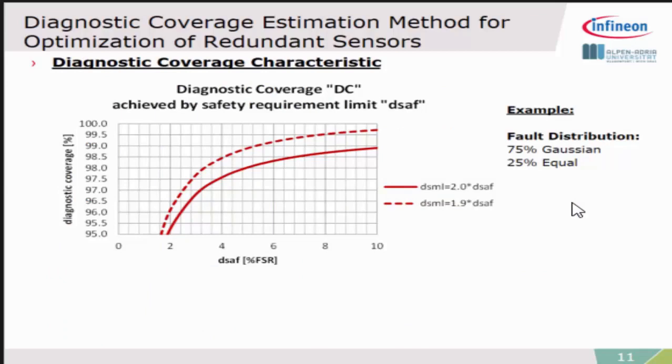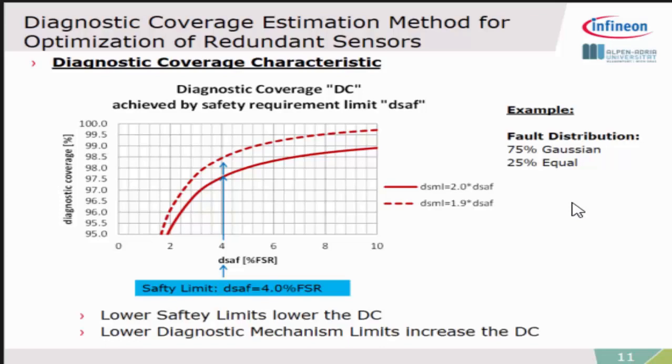These worst case points can be used for the calculation later on. When we draw everything in another graph, where on the x-axis you have the safety requirement, here is the graph of the possible diagnostic coverage figures which you get. In this example from before, if you take 4% of safety requirement, in that case taking 2 times the safety requirement, we achieve 97.5% diagnostic coverage. We can change this by changing the mechanism limit. The lower the safety limit, the lower is the diagnostic coverage, but the lower the diagnostic mechanism limit, I can increase diagnostic coverage. I can optimize the diagnostic coverage which I need. This actually is what we did with our system. We told our customer where to set this diagnostic mechanism limit to achieve the required diagnostic coverage.